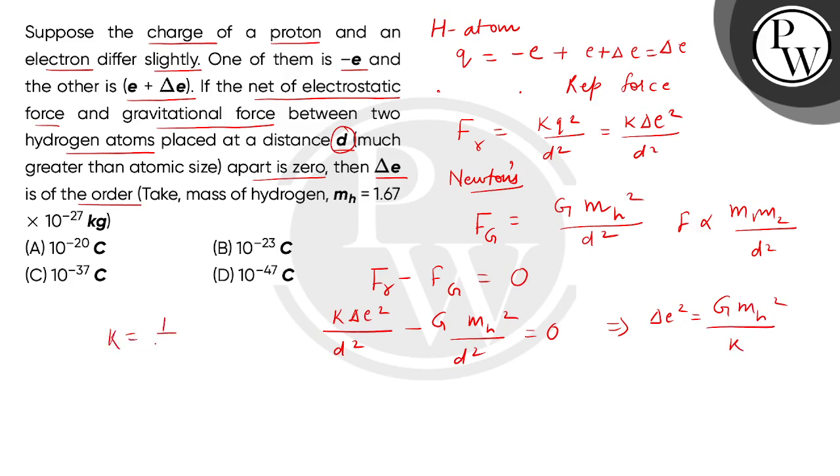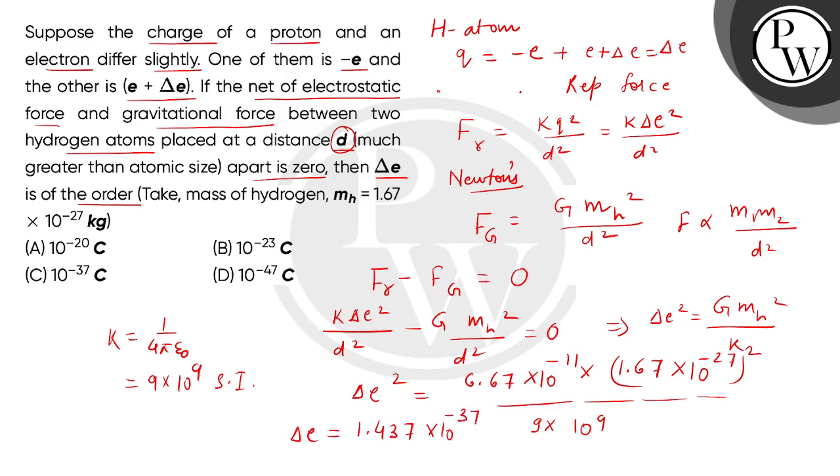Now we will put values. K, what do we get in electrostatic? 1 by 4 pi epsilon naught, which is 9 into 10 to the power 9 in SI system. So del E squared is equal to 6.67 multiplied 10 to the power minus 11, mass of hydrogen is 1.67 multiplied 10 to the power minus 27 and its square, and K we will put 9 multiplied 10 to the power 9. So when we take both sides square root, we will get del E as 1.437 multiplied 10 to the power minus 37 coulomb.